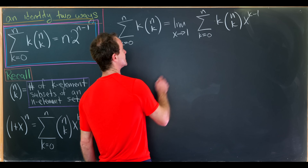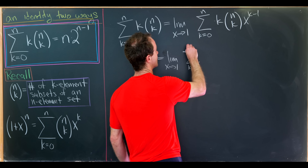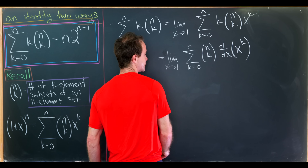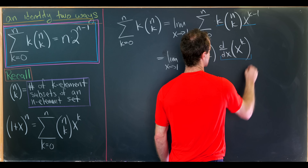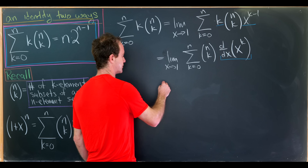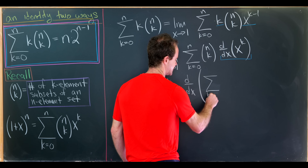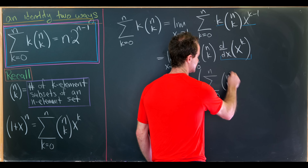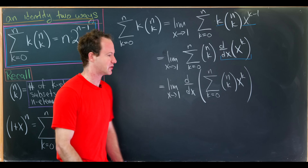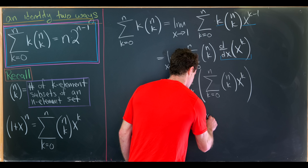That looks a lot like a derivative. So let's rewrite this as the limit as x goes to 1 of the sum as k goes from 0 to n of n choose k times the derivative with respect to x of x to the k. This k times x to the k minus 1 turned into the derivative of x to the k. Since the derivative is a linear operator and we have a finite sum, we can bring it out of the sum, giving us the limit as x goes to 1 of the derivative with respect to x of the sum as k goes from 0 to n of n choose k times x to the k. Now we can use our second definition: that sum is the expansion of 1 plus x to the n.